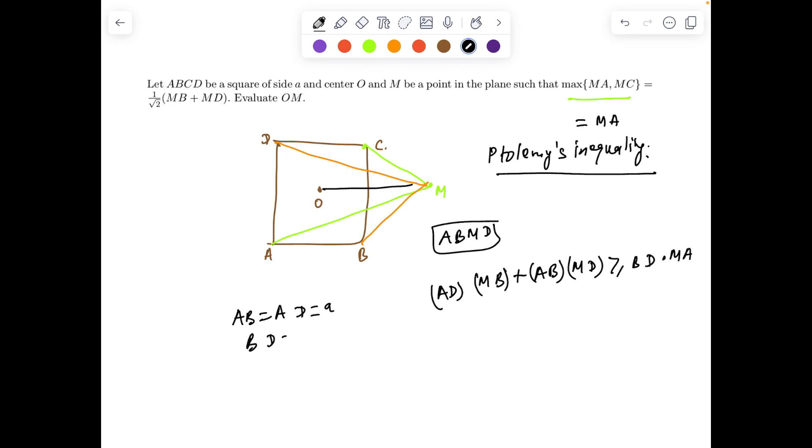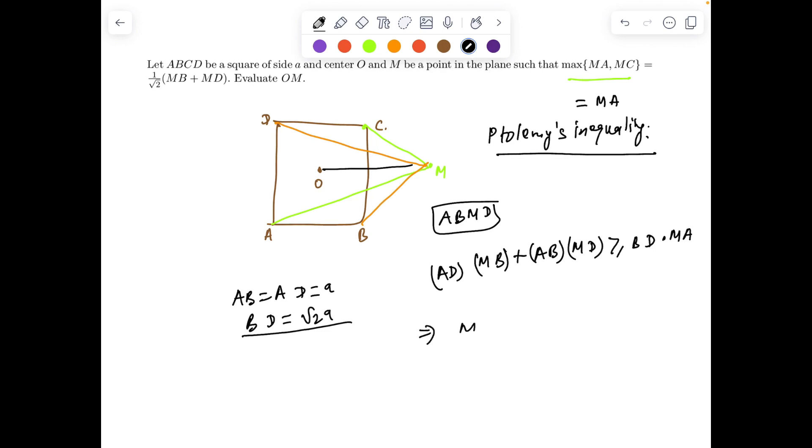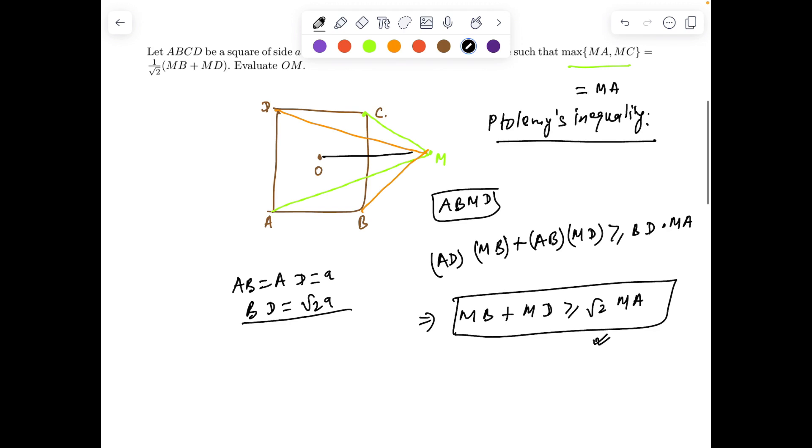Since ABCD is a square, AB and AD are both a. BD is √2a. Under these restrictions, I'm getting MB + MD ≥ √2·MA. But according to the given instruction of the problem it has to be actually equal. So equality will hold if and only if it is a cyclic quadrilateral. So from here I can tell ABMD must be cyclic.